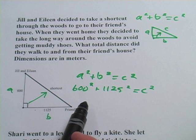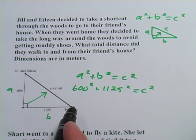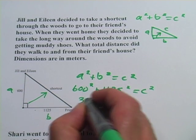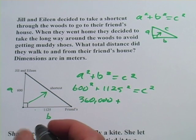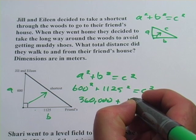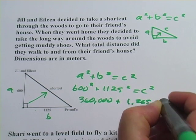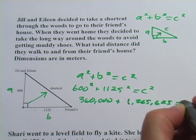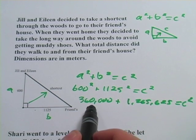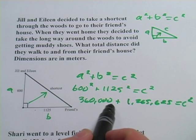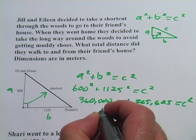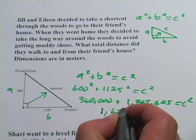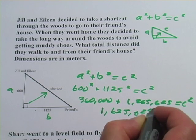Now to solve this, we're definitely going to want to use our calculator. We're squaring some big numbers here. I have 600 squared, that's 360,000 plus 1125 squared, and that's, my goodness, 1,265,625 equals c squared. Now we just have numbers here on this side that need to be added together, so we're going to go ahead and add those, and I get 1,625,625 equals c squared.